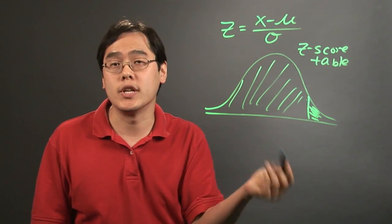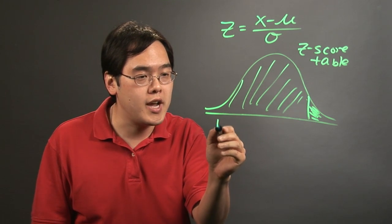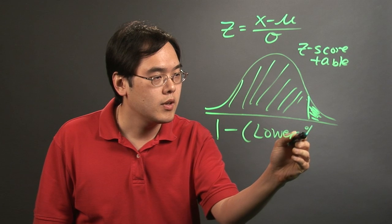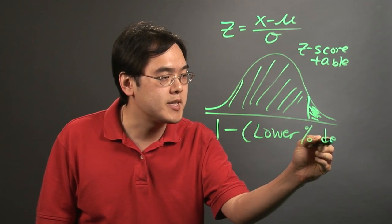So to find the upper percentage of a population, more often than not, you may need to do 1 minus the lower percentage decimal.